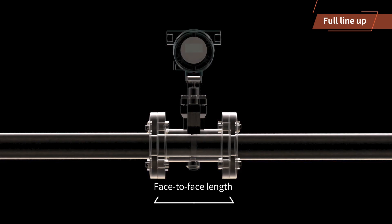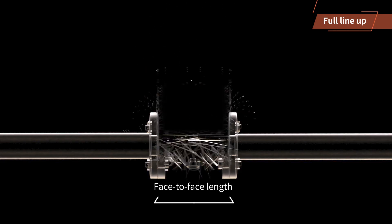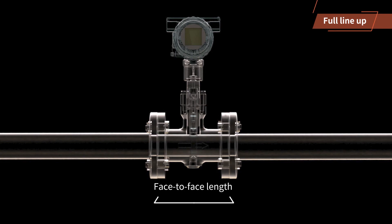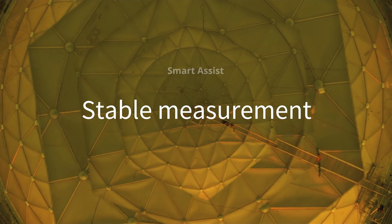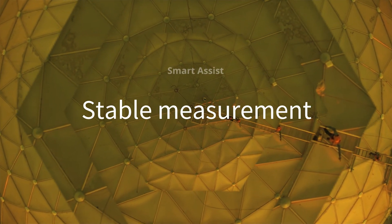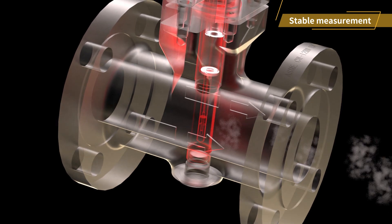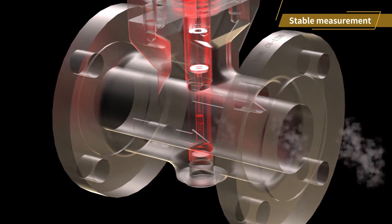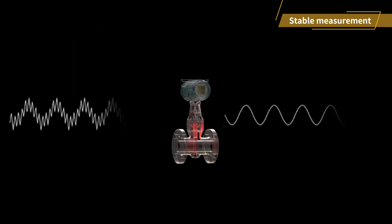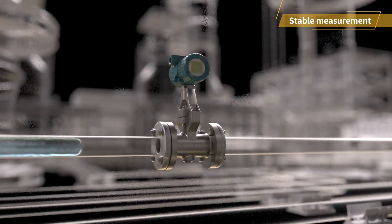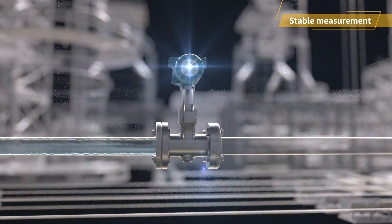High compatibility with conventional models including face-to-face length makes replacement easy. The unique structure that captures vortex signals from the entire shutter bar and digital signal processing technology that follows changes in noise provides stable measurement. It can be used immediately after installation without on-site adjustments.